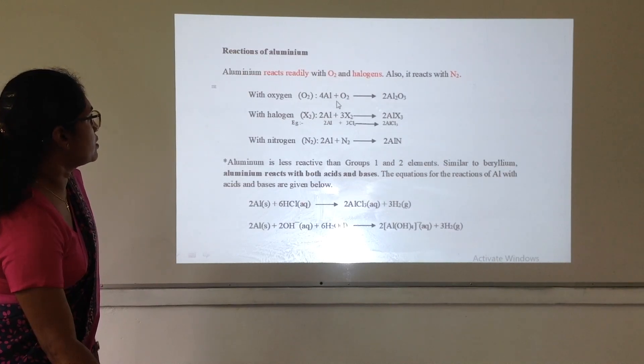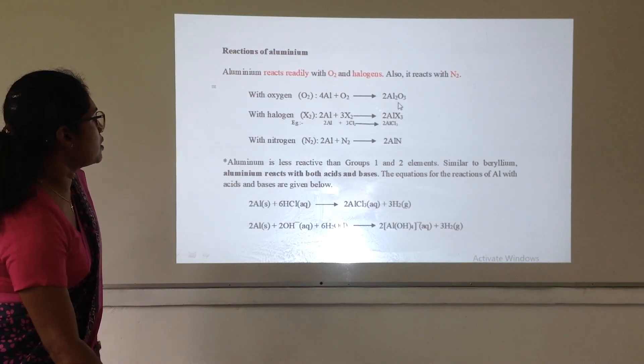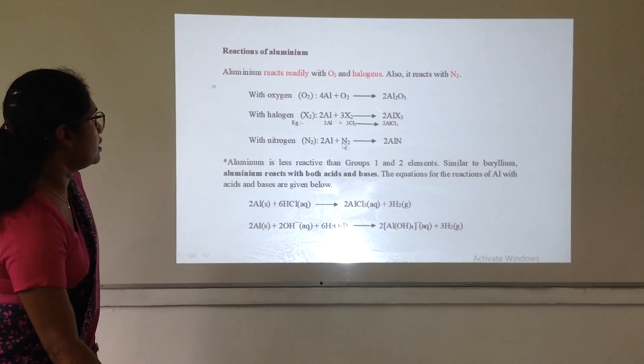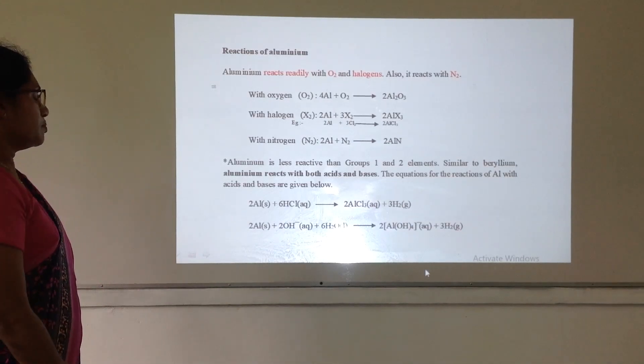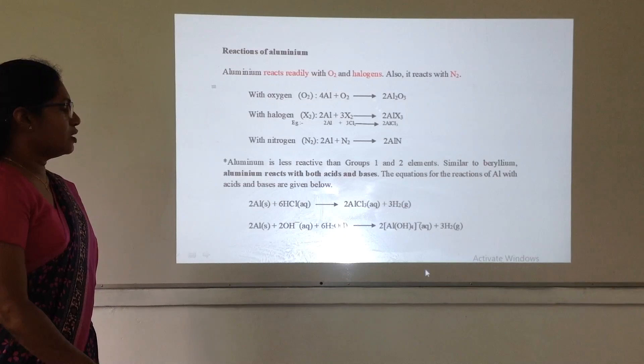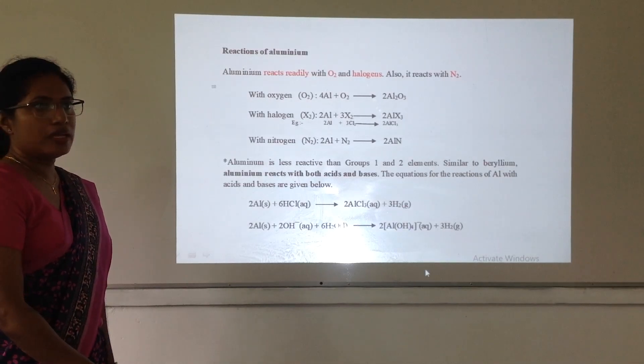With oxygen, it forms aluminium oxide. With halogens, aluminium halide. And with nitrogen, aluminium nitride. But aluminium is less reactive than group 1 and 2 elements.